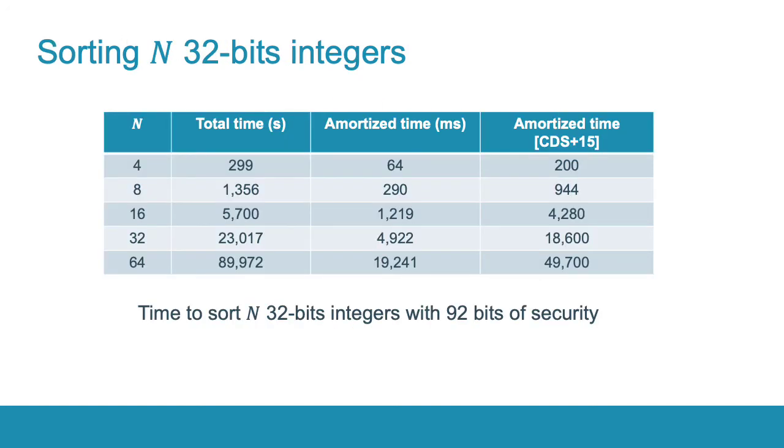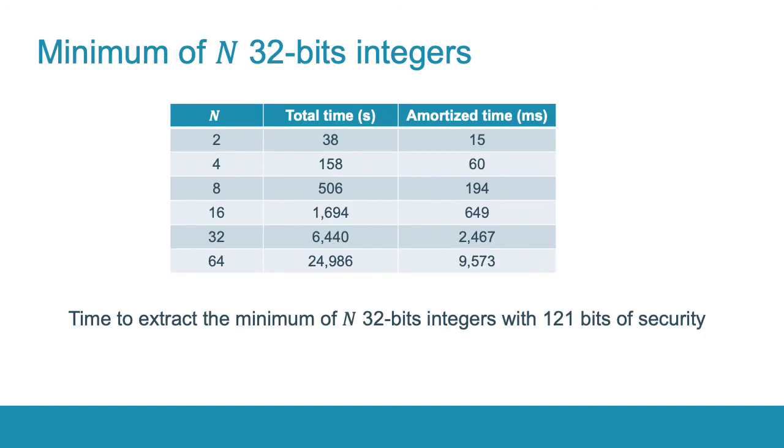We also sorted 32-bit integers and compared our results with the best work in this area by Cheon et al. For any array length up to 64, our algorithm is faster. We also ran the minimum element algorithm on array of the same length as in sorting. Here you can see the results for 32-bit integers.